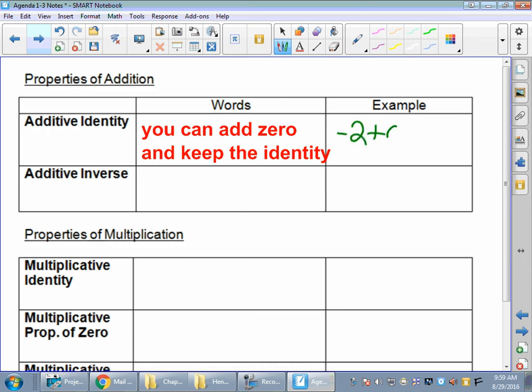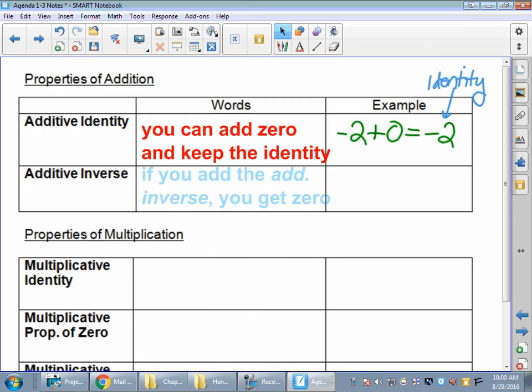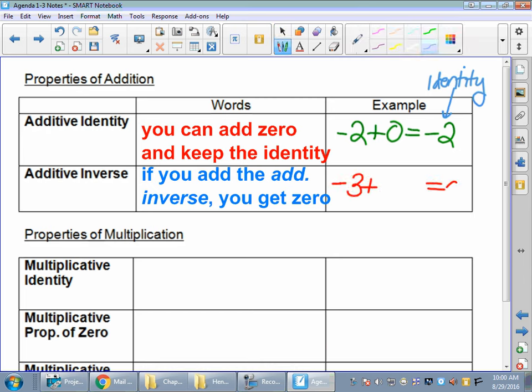Well, if we add 0, there is no identity theft happening. It's keeping the same value. Negative 2 plus 0 is still negative 2. It's keeping its identity. So we're adding but keeping the same identity. Additive inverse is kind of along the same lines. If you add the additive inverse, you get 0.